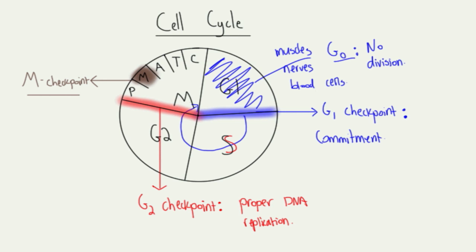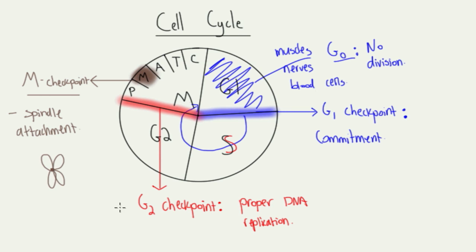Moving into the M phase — the M checkpoint is a little more complex, but in general, the job here is to make sure that the spindle is attached properly. Remember, if you're going through mitosis, you have a chromosome, and during metaphase they all line up in the middle. There are spindles that come in and attach to something called the kinetochore within the centromere, and the job eventually is to pull these apart.